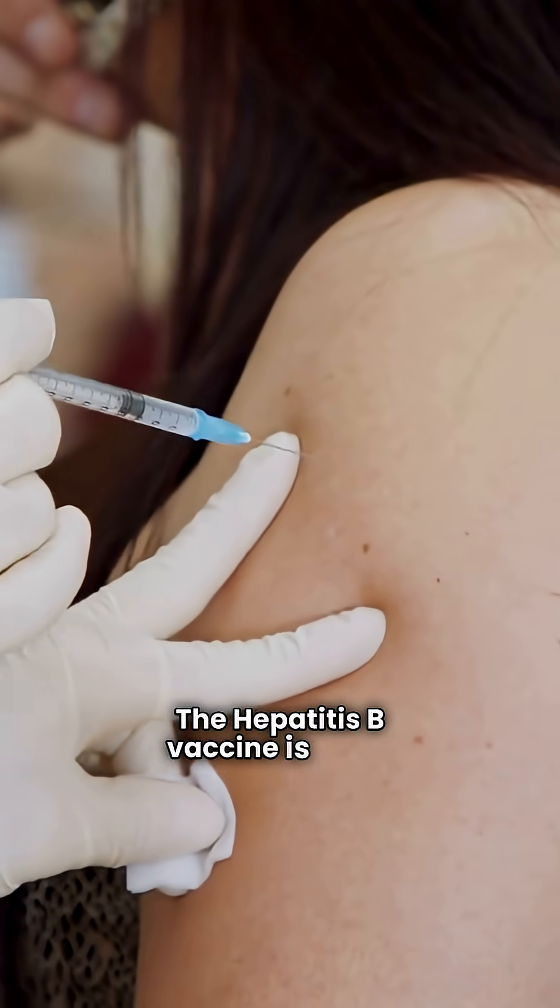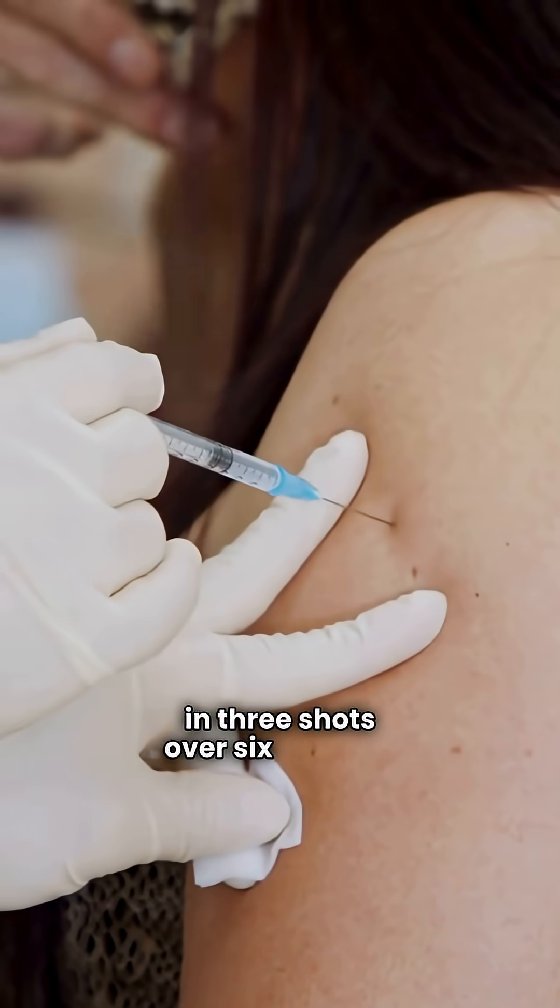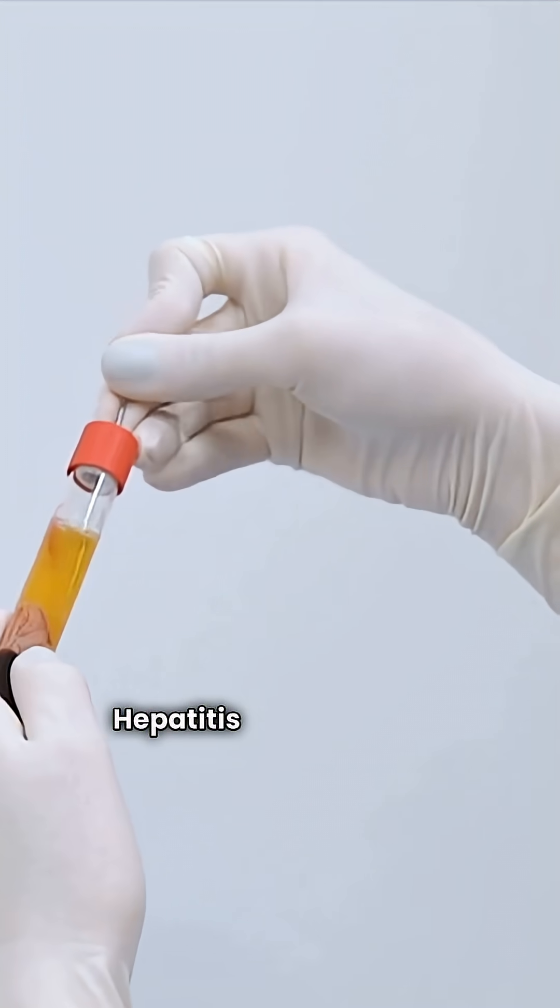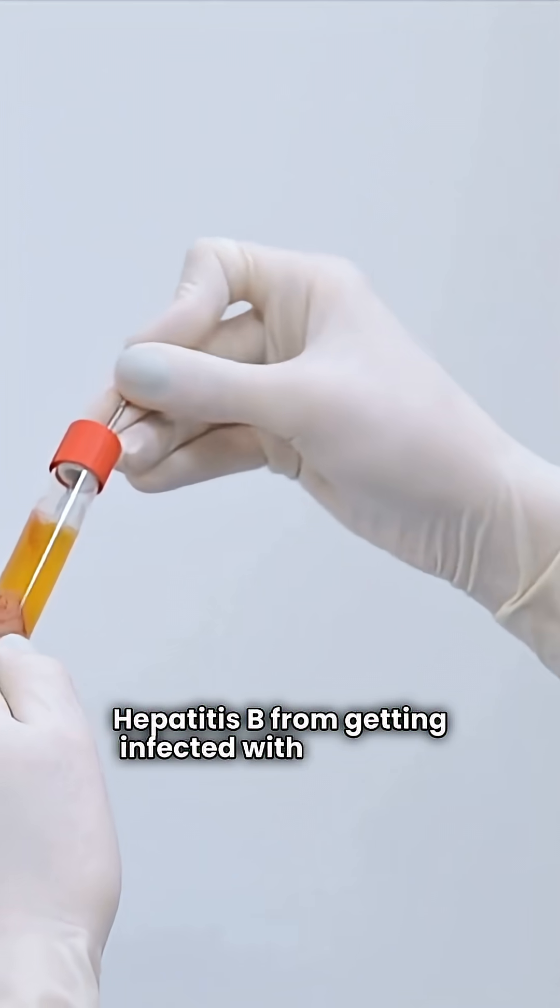The Hepatitis B vaccine is given in three shots over six months. It's designed to protect people who test negative for Hepatitis B from getting infected with the virus.